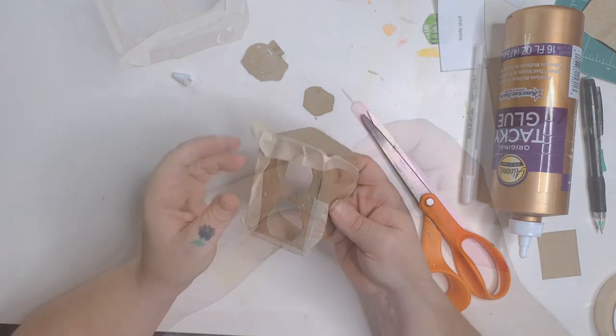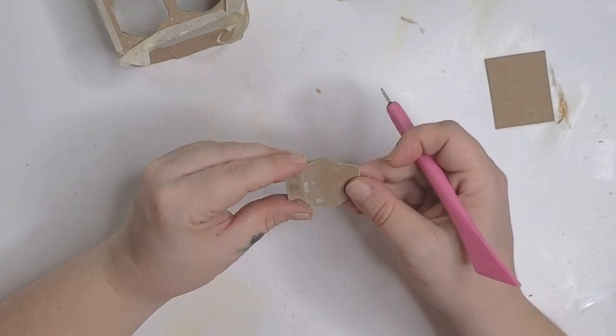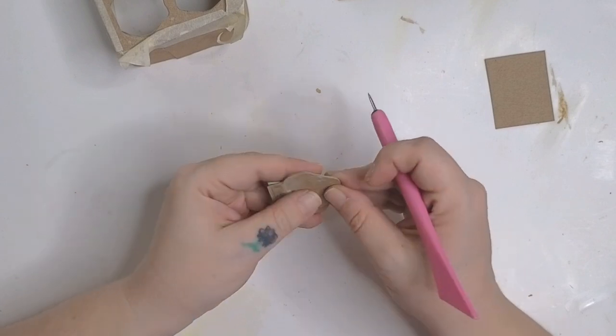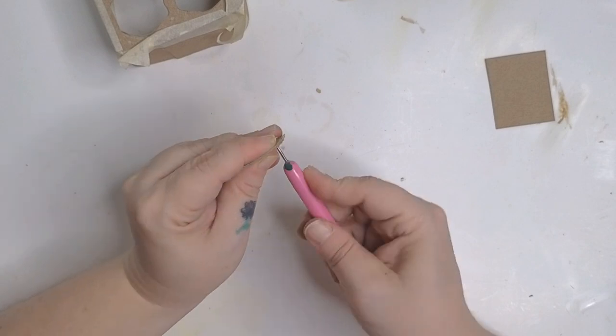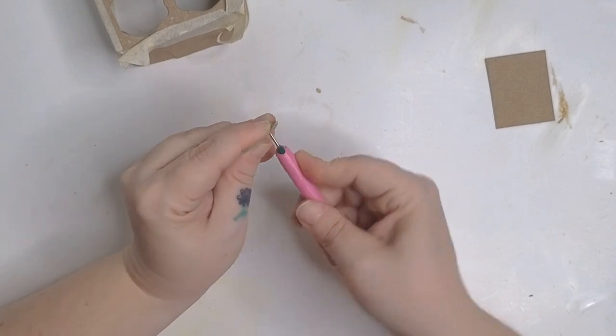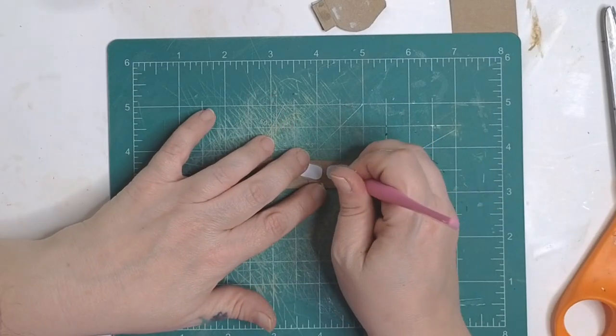Set it aside to dry, then grab your doors. We're going to poke the holes for the handles. Hold your doors so they're facing each other with the same faces together, then poke your hole with a pokey tool. This makes sure the door handles will be in the same place on both doors. And while we have the pokey tool out, poke the holes for the tiny drawers.